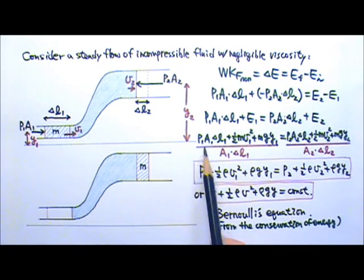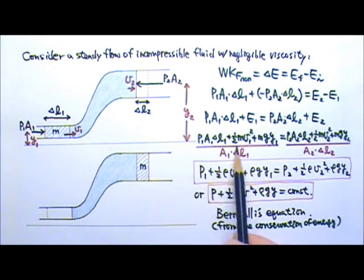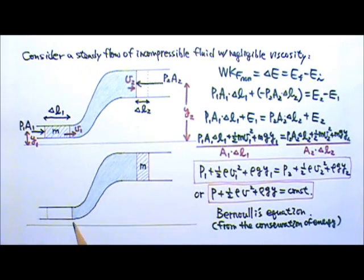So pressure is a sort of energy per volume. And this is the kinetic energy per volume, gravitational potential energy per volume. And these three energy per volume terms added together on the two sides should be equal.